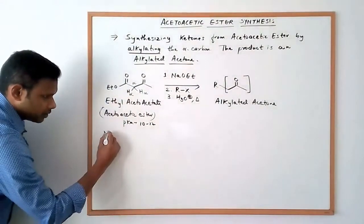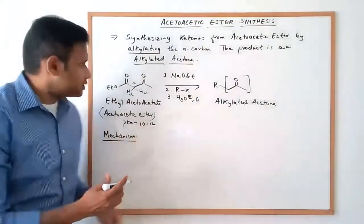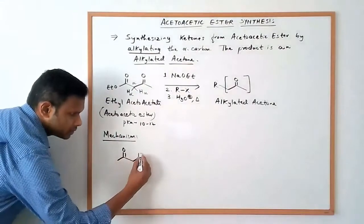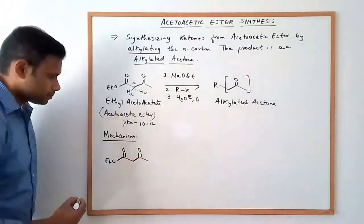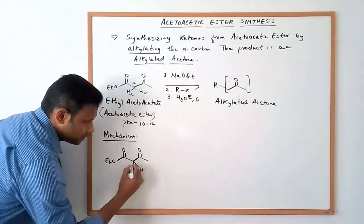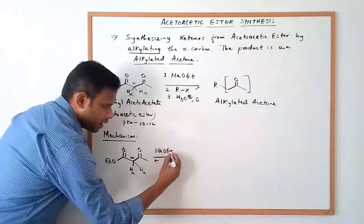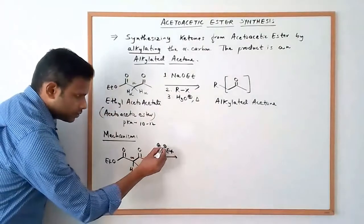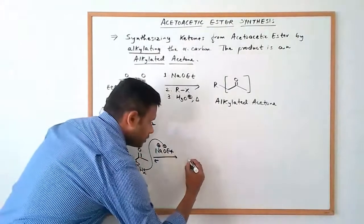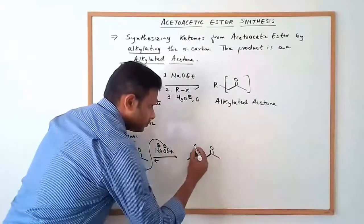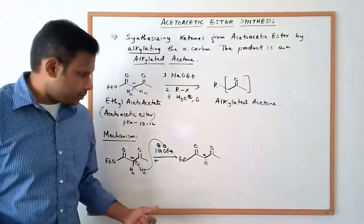Let's look at the steps in this reaction. This is not a detailed mechanism but a simple overview of what's happening in each step. We start with ethyl acetoacetate, and when we treat it with the base, the base can efficiently deprotonate the alpha hydrogen because of the favorable pKa values. The electrons end up on the alpha carbon, giving us the enolate corresponding to this acetoacetic ester.